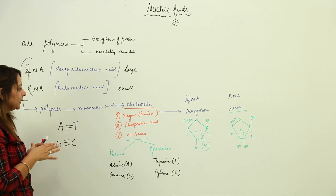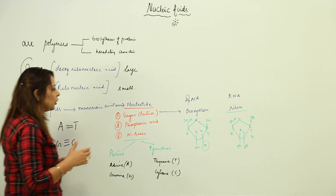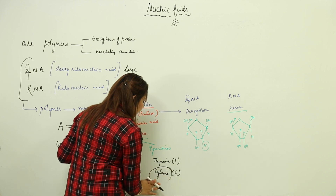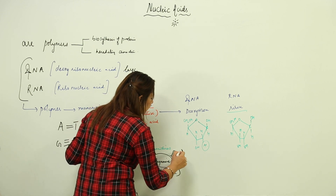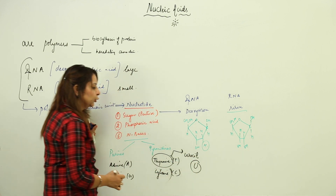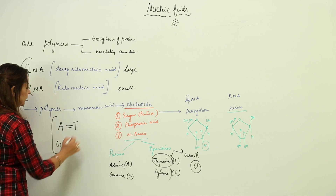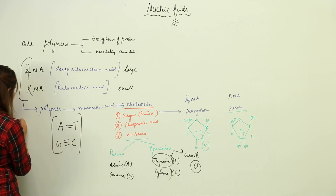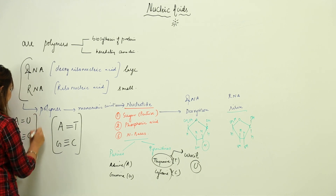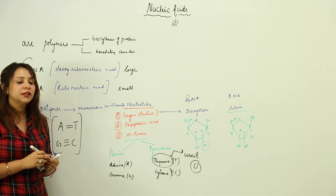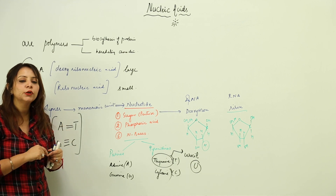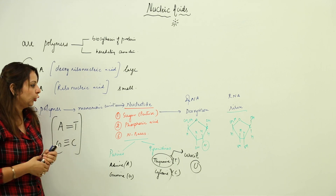This base pairing is present in DNA, but in RNA, instead of thymine we have another pyrimidine called uracil, abbreviated as U. The only difference between DNA and RNA base pairing lies in thymine versus uracil; otherwise the bases pair up in the same way — purines with pyrimidines via double or triple bonds.